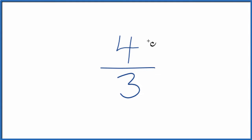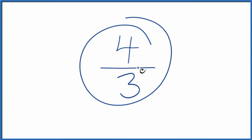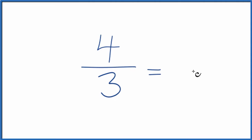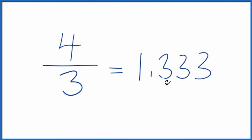Let's convert the fraction four-thirds to a decimal. There are two ways we could do it. One is you could just divide four by three on your calculator. If you do that, you'll end up with 1.333 and the threes just keep going. So let's put a bar over this three to show it repeats.